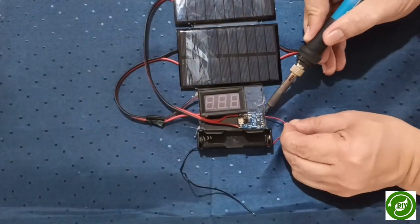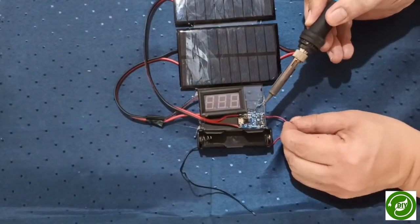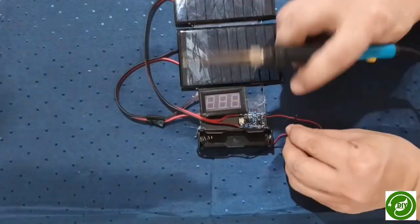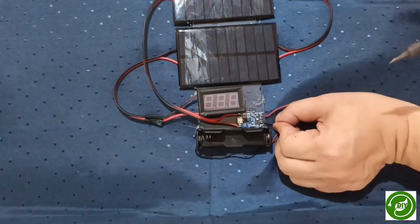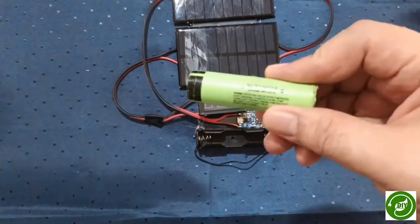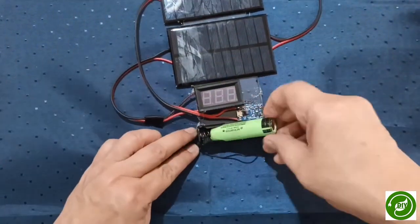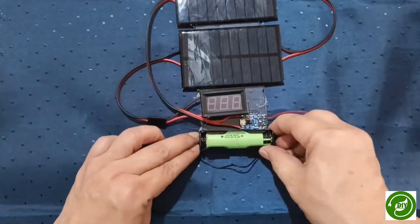Carefully connect the plastic battery holder to the lithium battery charger module, ensuring that the minus and plus terminals are correctly aligned. Insert the lithium Li-ion battery into the plastic battery holder, ensuring correct alignment of the minus and plus terminals.